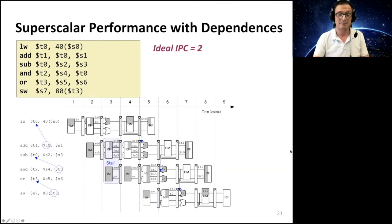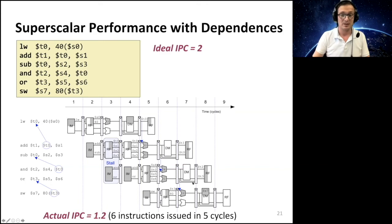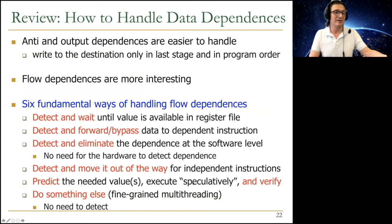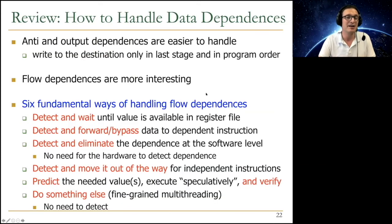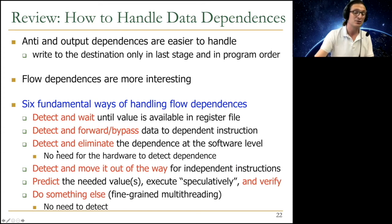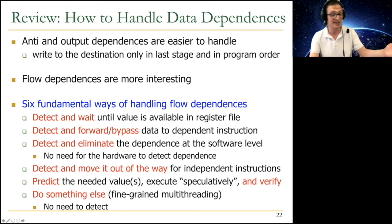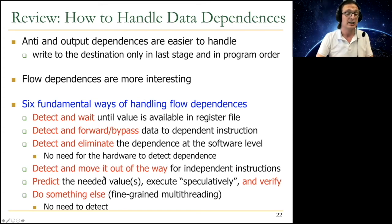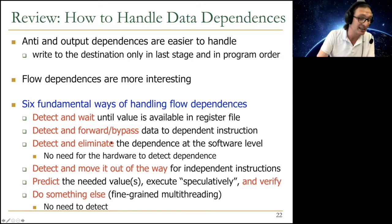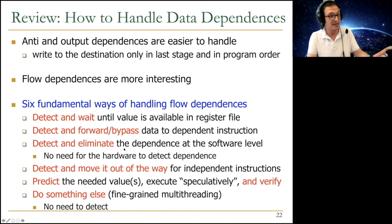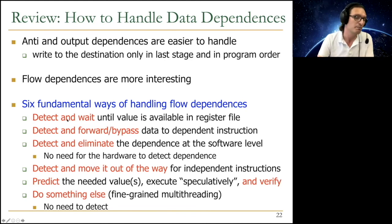Renaming is not easy for wide superscalar machines. This potentially lengthens the critical path delay and clock cycle time. The disadvantages can actually reduce the performance gains achieved by increasing instruction throughput. Of course, more hardware resources are needed — you need to replicate the pipeline, at least parts of it, so that you can fetch, decode, execute, and retire multiple instructions per cycle.